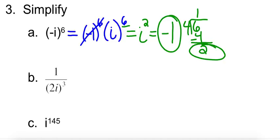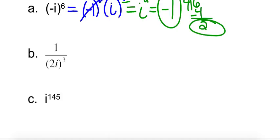So let's go ahead and do c first, and we'll come back to b. So this is the type of thing you might see on the ACT. They say, what's i to the 145th power? All you have to do is, since those powers of i repeat in 4s, you take 145 and divide it by 4.